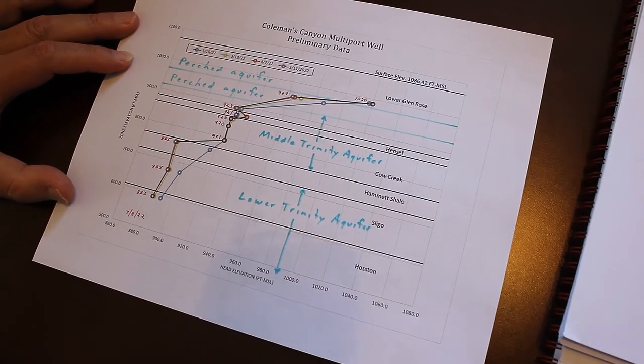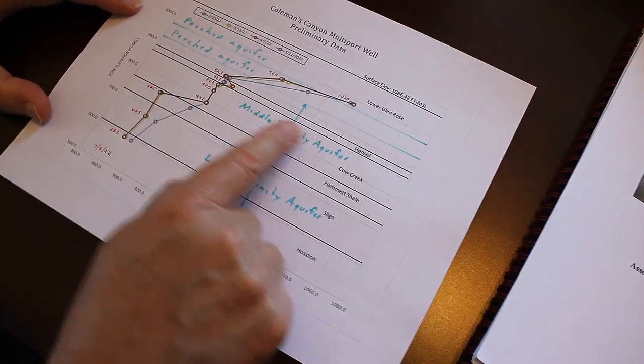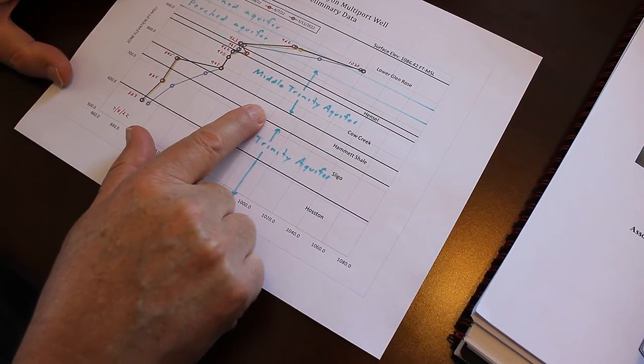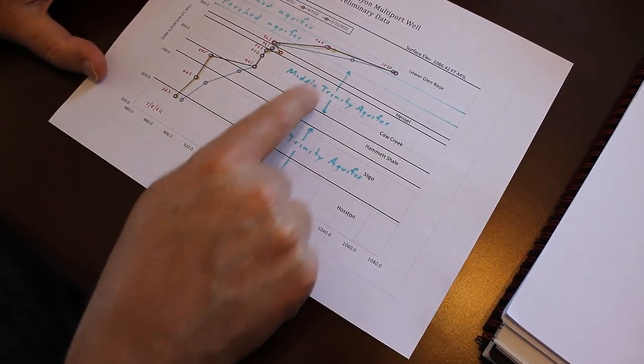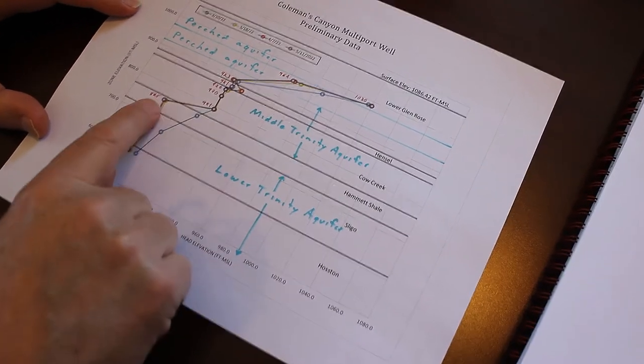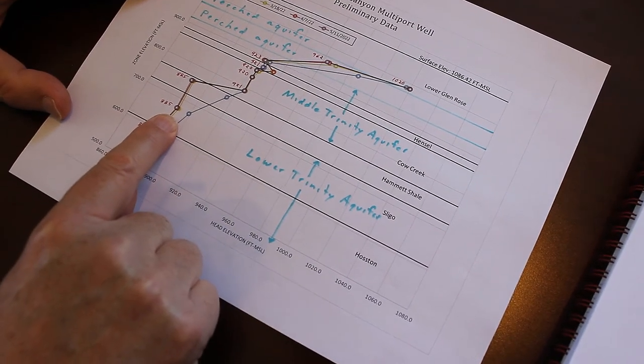That's when we come in with the hydraulic conductivity testing to understand better how permeable is the Cow Creek compared to the Sligo and compared to the Hammett. We can see is it possible for any water to be moving through here, which looks very unlikely to have that much head difference between the Cow Creek and the Sligo.